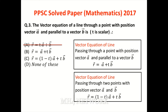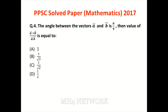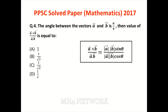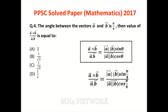Question number four: the angle between vectors A and B is theta. Value of (A cross B) / (A dot B) find karni hai, yeh ratio form mein define karna hai. Cross product aur dot product ka formula apply karein — numerator aur denominator mein magnitude of A aur magnitude of B cancel ho jaate hain. Sine aur cosine ki pi/4 (45 degree) pe value same hoti hai, toh woh bhi cancel ho jaate hain. Simply 1 aa jaata hai — option A is the correct answer.